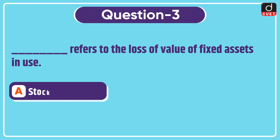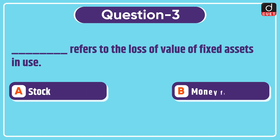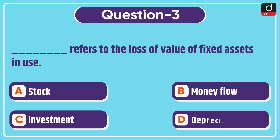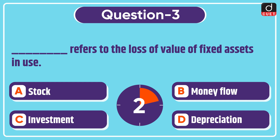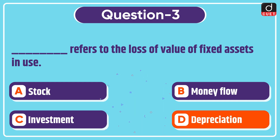Next question is: dash refers to the loss of value of fixed assets in use. Stock, money flow, investment, or depreciation? The correct answer is option D, depreciation.